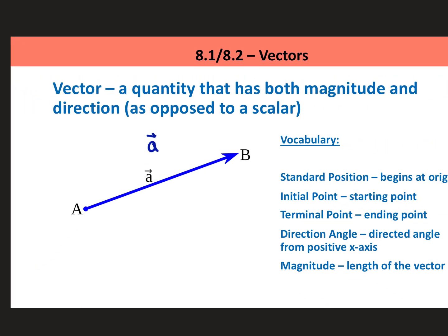Or you can name a vector by its initial and terminal points. So we could name this vector AB like that. A couple of different ways to name vectors.